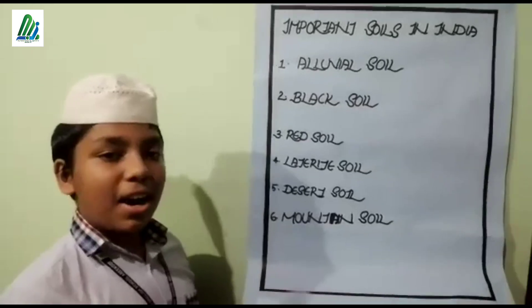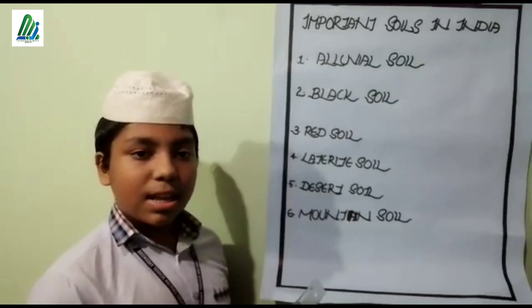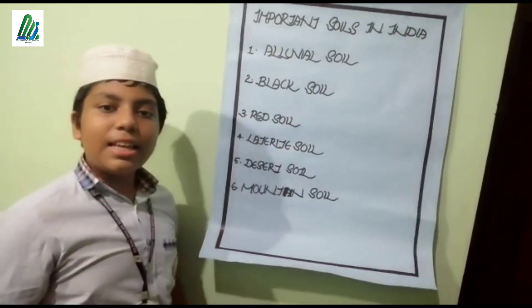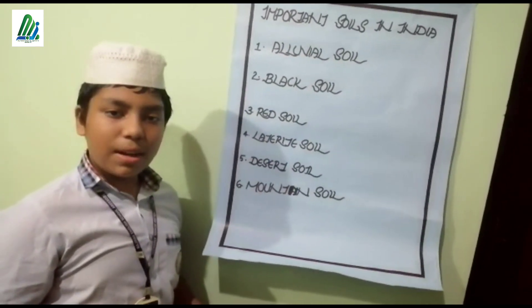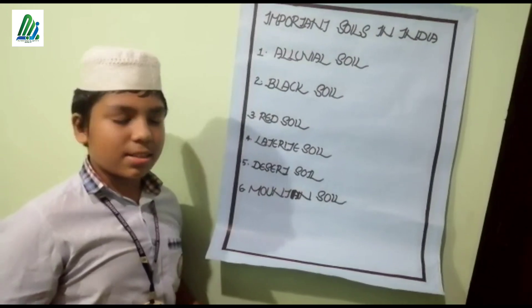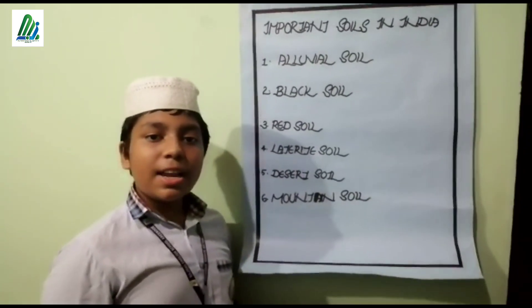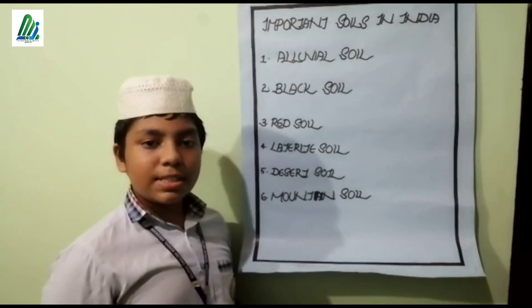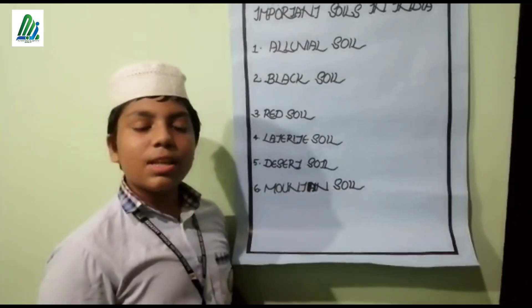Now let us study different types of soil in our country and our state. The first important type is alluvial soil. India has many rivers, so alluvial soil is widely present. This soil is highly fertile and is found mostly in flood plains and deltas. The second type is black soil, which is suitable for cotton cultivation. Black soil is known as regur and is formed by the disintegration of lava rock.